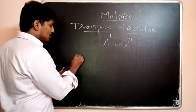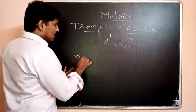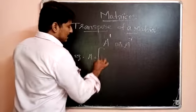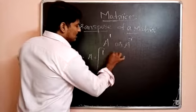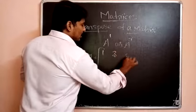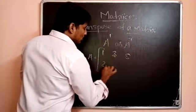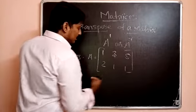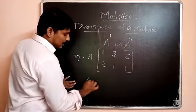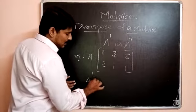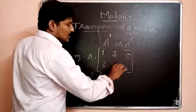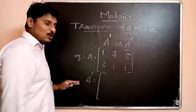Okay, let us go to an example. If A is equal to the matrix 1, 3, 5, 2, 1, 1 — find A transpose.